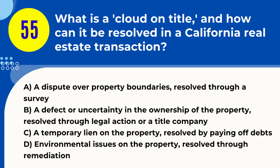Question 55. What is a cloud on title, and how can it be resolved in a California real estate transaction? A. A dispute over property boundaries, resolved through a survey. B. A defect or uncertainty in the ownership of the property, resolved through legal action or a title company. C. A temporary lien on the property, resolved by paying off debts. D. Environmental issues on the property, resolved through remediation. Answer: B. Explanation. A cloud on title refers to any defect, claim, or uncertainty that affects the ownership of the property, such as unresolved liens or disputes over property ownership. In California, resolving a cloud on title typically involves legal action or working with a title company to clear up any issues.